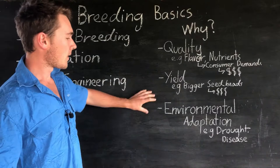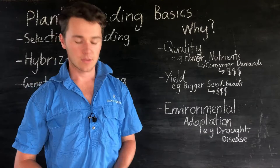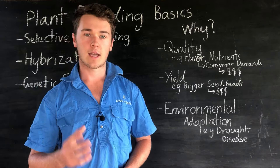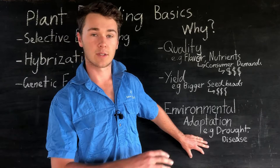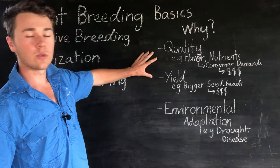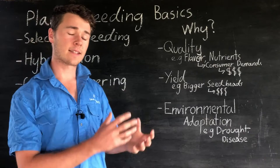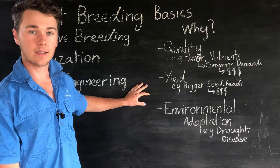Lastly we have environmental adaptation. This is protecting or making our plants more resistant to environmental factors — so heat, drought. If it's really hot, like in Australia, we want plants that can survive in those conditions. Also disease — if we can make our plants more tolerant to certain diseases, we're going to increase their yield and quality. Plant breeding boils down to increasing factors that make plants more desirable: quality, yield, or environmental adaptation — all of which support our business by making more money.